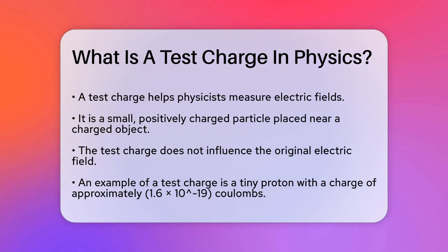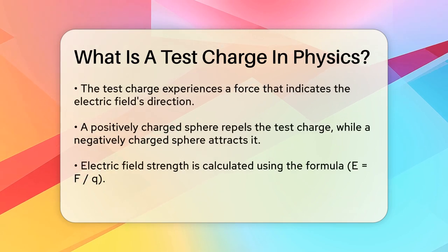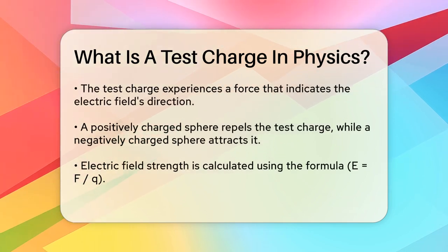This is where the test charge comes in. A test charge is a small, positively charged particle that you place near the charged object. This particle is so small that it doesn't affect the original electric field. Think of it like a tiny probe that helps you measure the field without altering it.